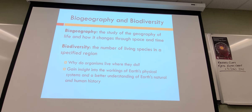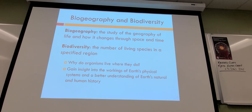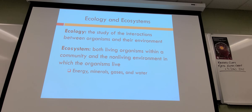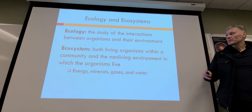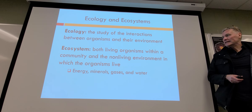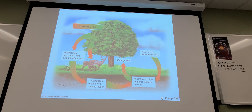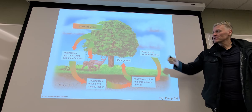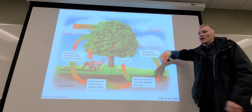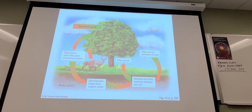Biodiversity refers to the number of living species in a specified region. In general, places that have more plants and animals are more biodiverse. Ecology is the study of interactions between organisms and their environment. An ecosystem includes both the living organisms within the community and the non-living environment in which the organisms live. We all basically know about the nutrient cycle — there are living and non-living parts, but it's all mutually sustained.